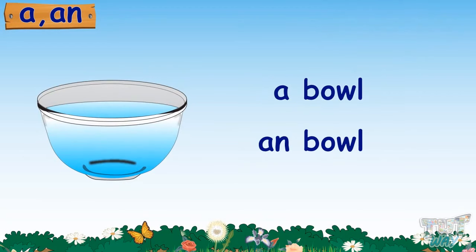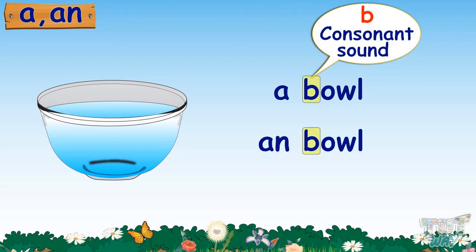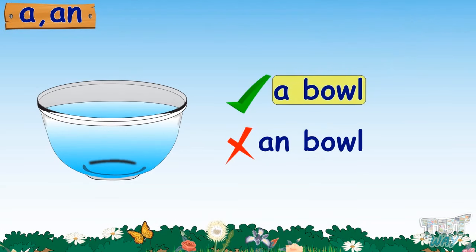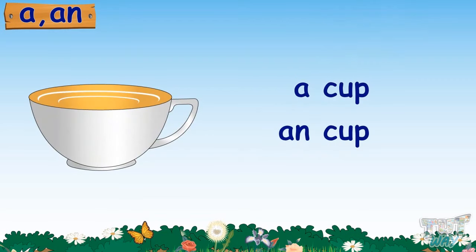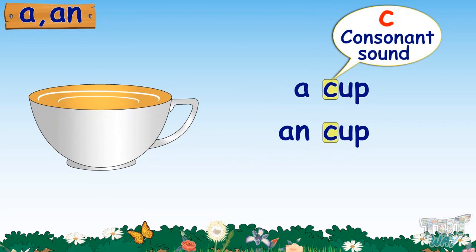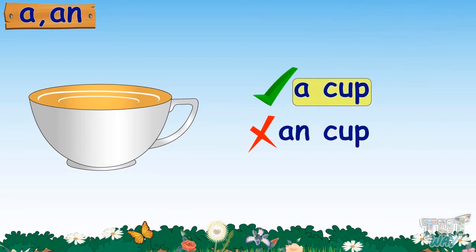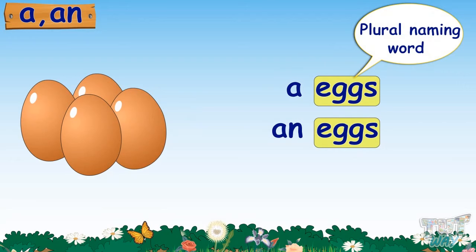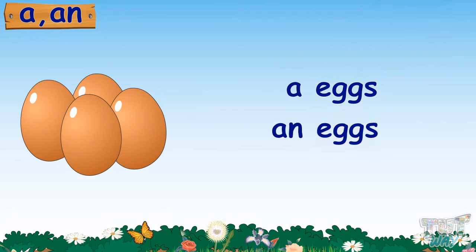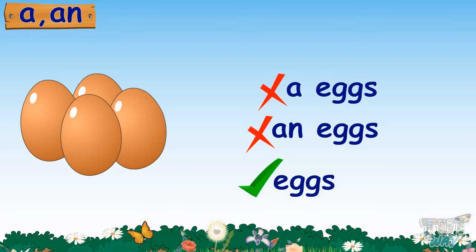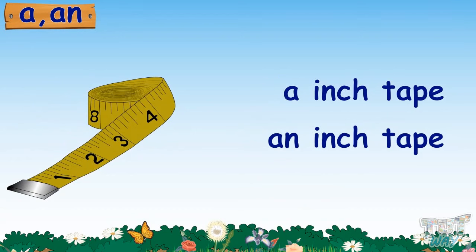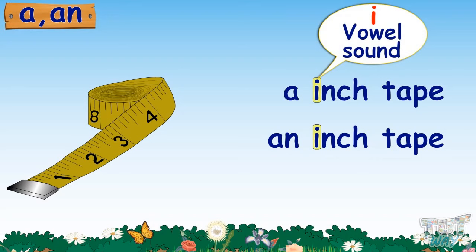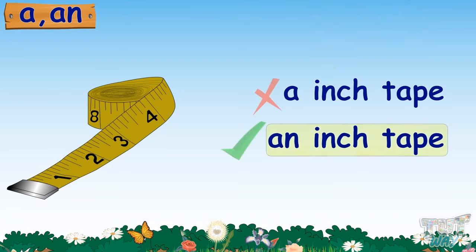Ball — ball begins with a consonant sound, the sound of letter B, so we will say: a ball. Cup — cup begins with a consonant sound, the sound of letter C, so we will say: a cup. Eggs — eggs is a plural naming word, as there are more than one egg, so we cannot use 'a' or 'an' with it. We will say: these are eggs. Inch tape — it is a single object and begins with a vowel sound, the sound of letter I, so we will say: an inch tape.